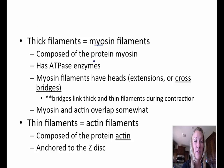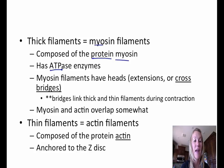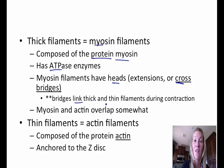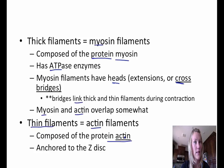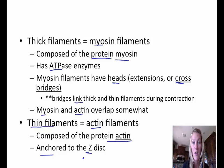Thick filaments, or myosin filaments, are composed of the protein myosin. They also have ATPase enzymes and extensions called cross bridges, which link thick and thin filaments during contraction — the myosin and actin overlap. Thin filaments are called actin filaments and are composed of the protein actin. They are anchored to the Z-disc, which is the darker area of the I-band.